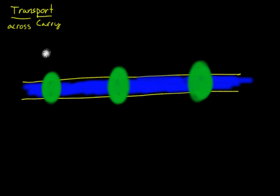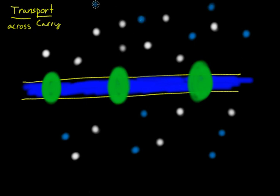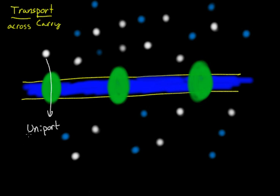Now we'll have our little molecules that are crossing, and our other different types of molecules. The first one we'll discuss is one that carries just one molecule across, and this is called a uniporter. Uni means one, so you carry just one across.